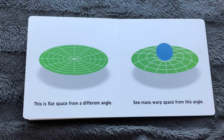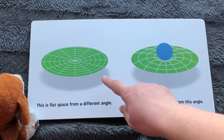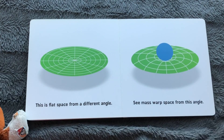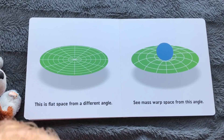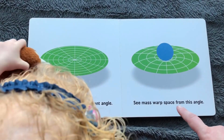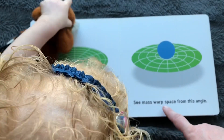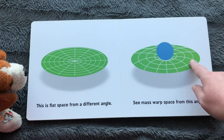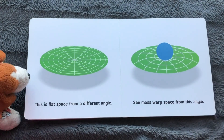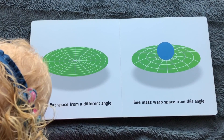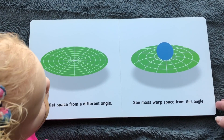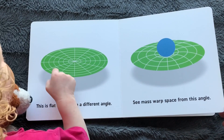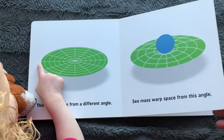This is a flat space from a different angle. Mass warps space from this angle, and from this angle.